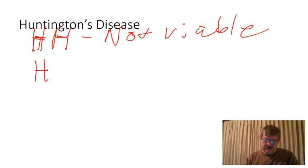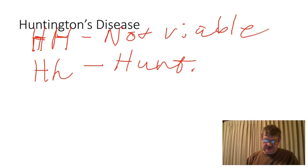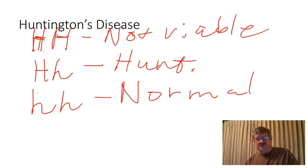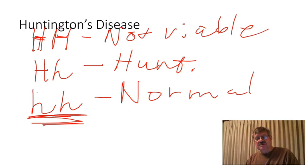The individual that is heterozygous is the person that would have Huntington's disease. Those with two recessive alleles are free of Huntington's disease — that's the homozygous recessive genotype. Recall that Huntington's occurs only in one out of 20,000 people, meaning 19,999 out of 20,000 are of that homozygous recessive type. This is an example where the dominant allele is not the most common — here, homozygous recessive is by far the most common.